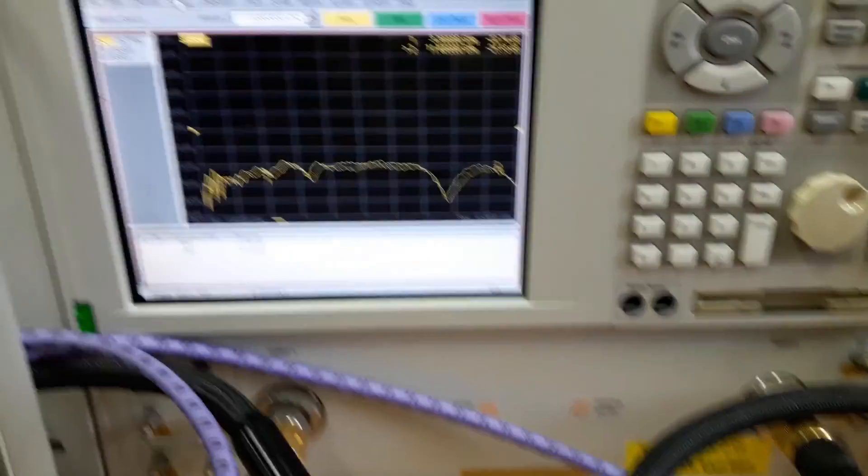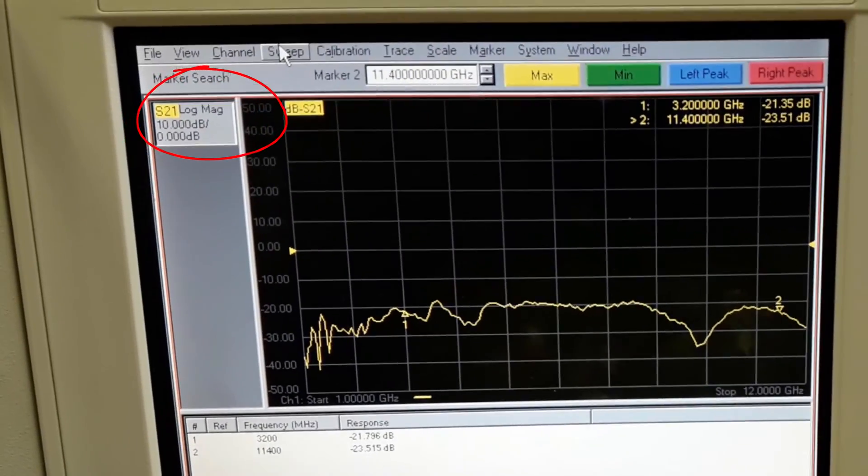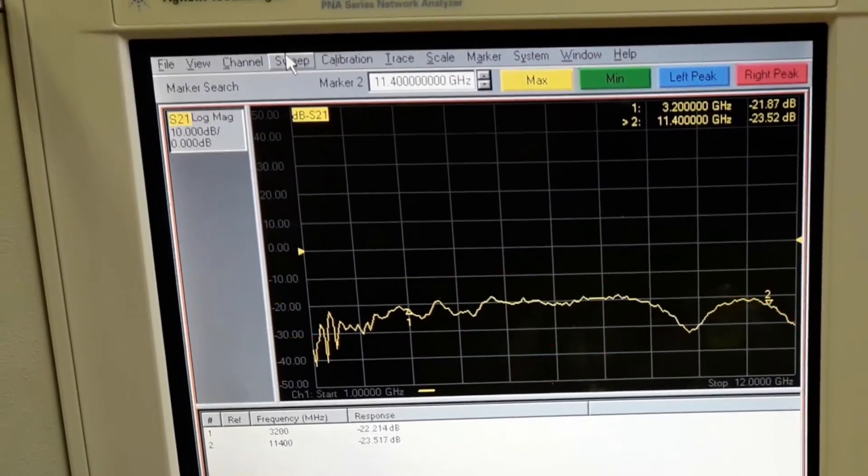I have to check the S21 magnitude of this MIMO antenna for measuring the mutual coupling. On the screen, you can see the S21 magnitude in dB scale which is below minus 20 dB, which is a good value for any MIMO antenna.